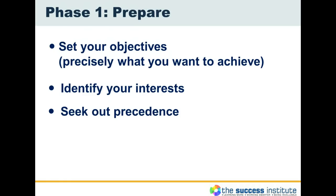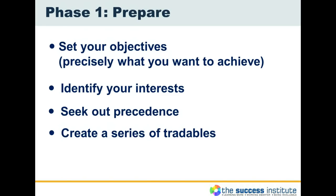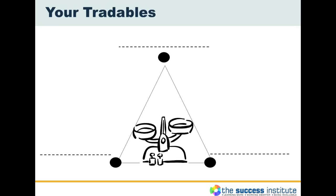For example, is the dollar going higher or lower? Have the costs of using our trainers gone up? Are there other costs involved that I need to let them know about? Now I want to create a series of tradables — what is it I'm going to trade and concede on in order to get what I want. As you would have learned in our training, there are three tradables: time, money, and the specifications.